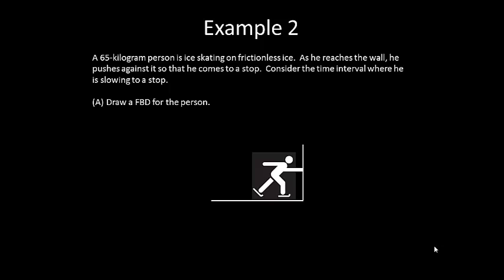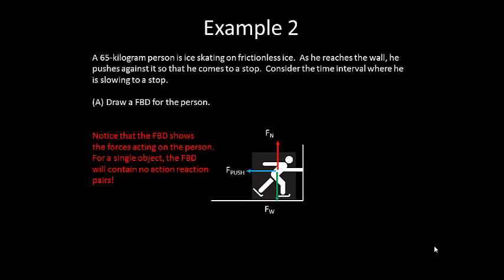Let's first draw a free-body diagram for the person. We have the person's weight pulling down, normal force pushing up, and then this wall pushing the person to the left.